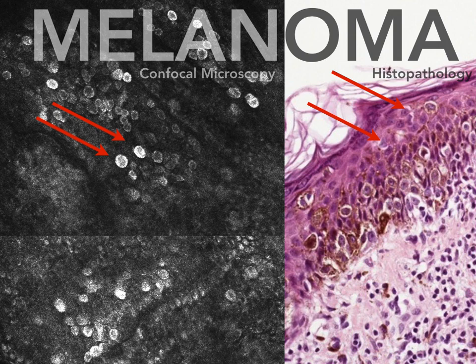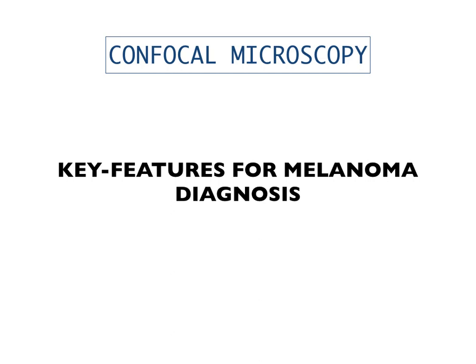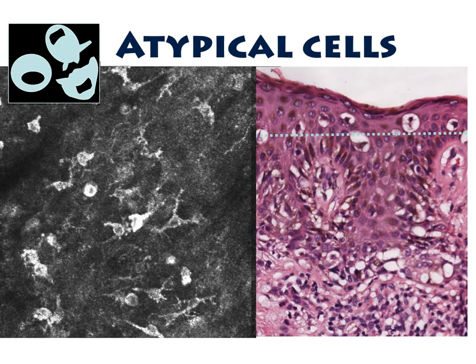Confocal microscopy is able to detect important histologic features for the diagnosis of melanoma in early stages. The key features are the presence of atypical cells either within the epidermis — corresponding to pagetoid cells — or at the junction. Cells can be roundish, polygonal, or dendritic and stellate, usually characterized by strong cytoplasmic reflectance and dark nuclei. Cell number, extent, and polymorphism are important characteristics for achieving an accurate melanoma diagnosis.